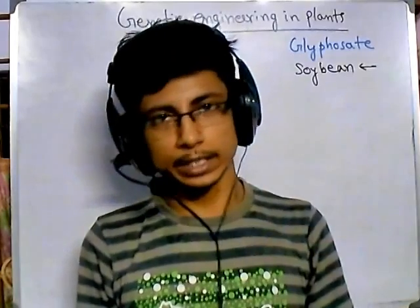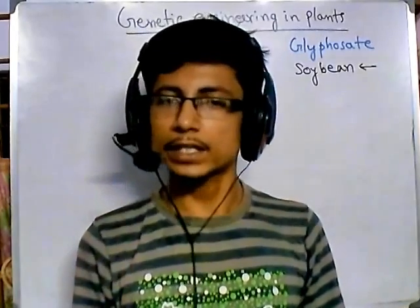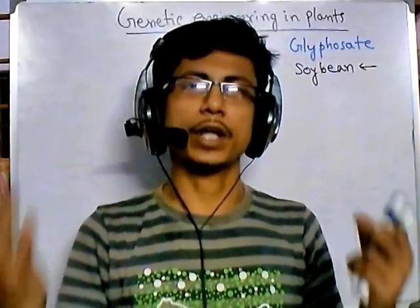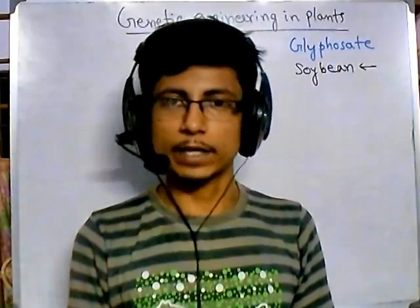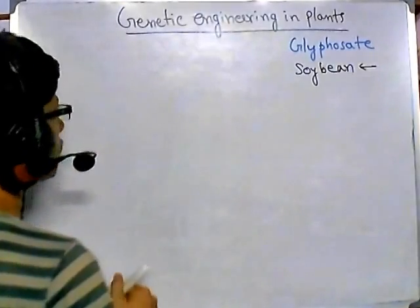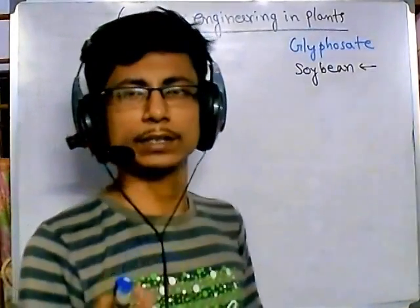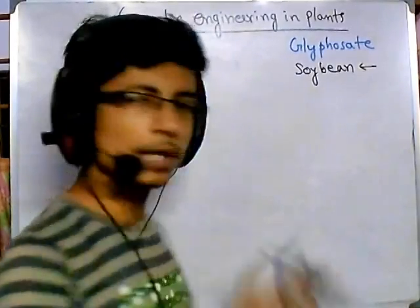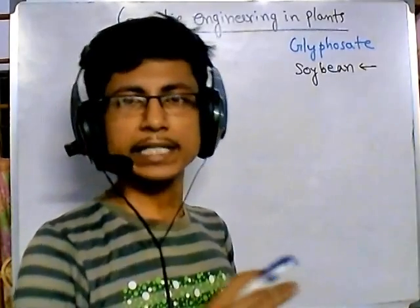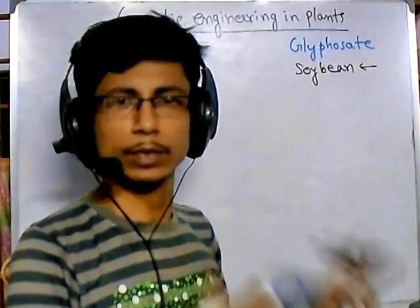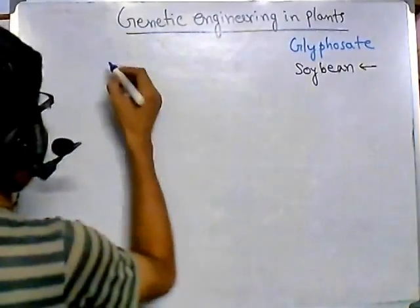For genetic engineering, the key tool is recombinant DNA technology — that means we'll use a plasmid as a vector, clone our desired gene into it, and apply plant tissue culture to develop specialized plants. You must know the basics of recombinant DNA technology. If you don't, you can find entire playlists on my YouTube channel. Watch some overview videos first, then come back here.